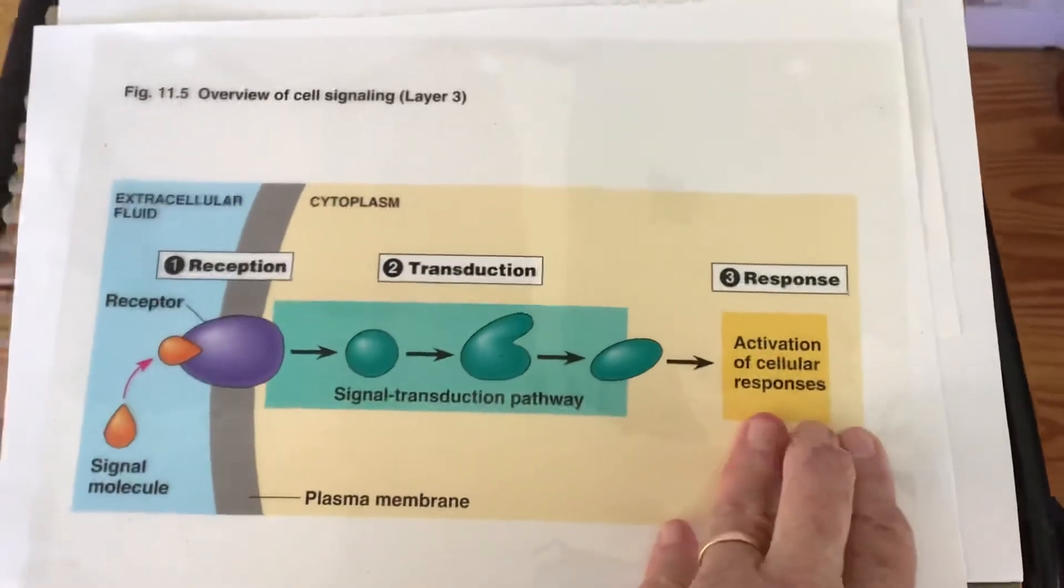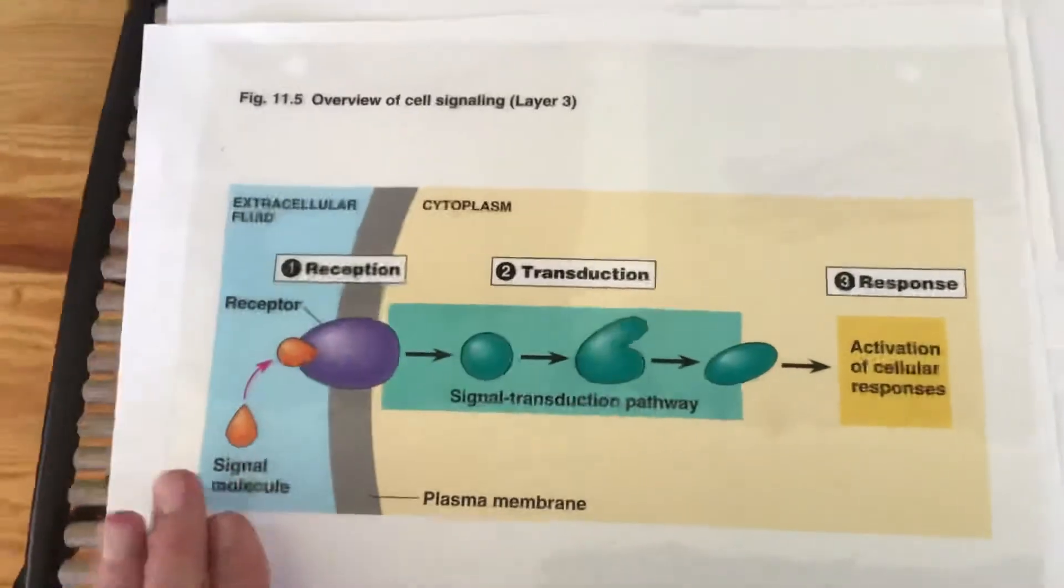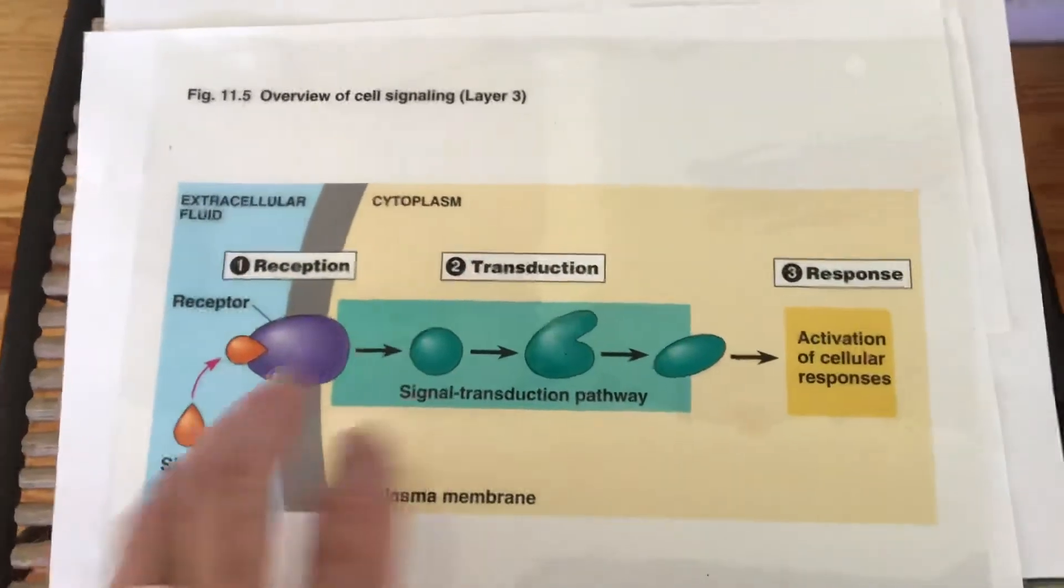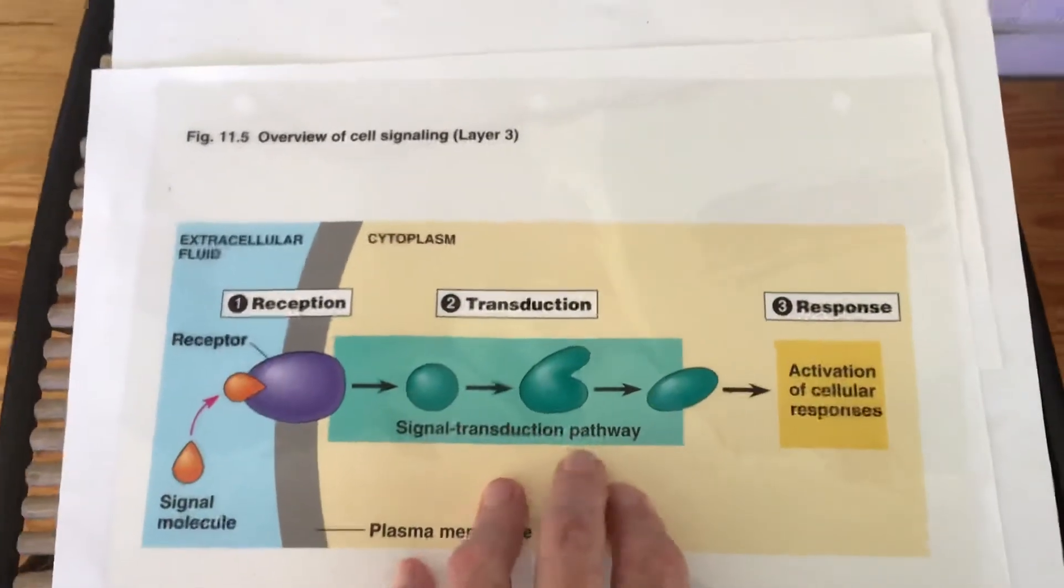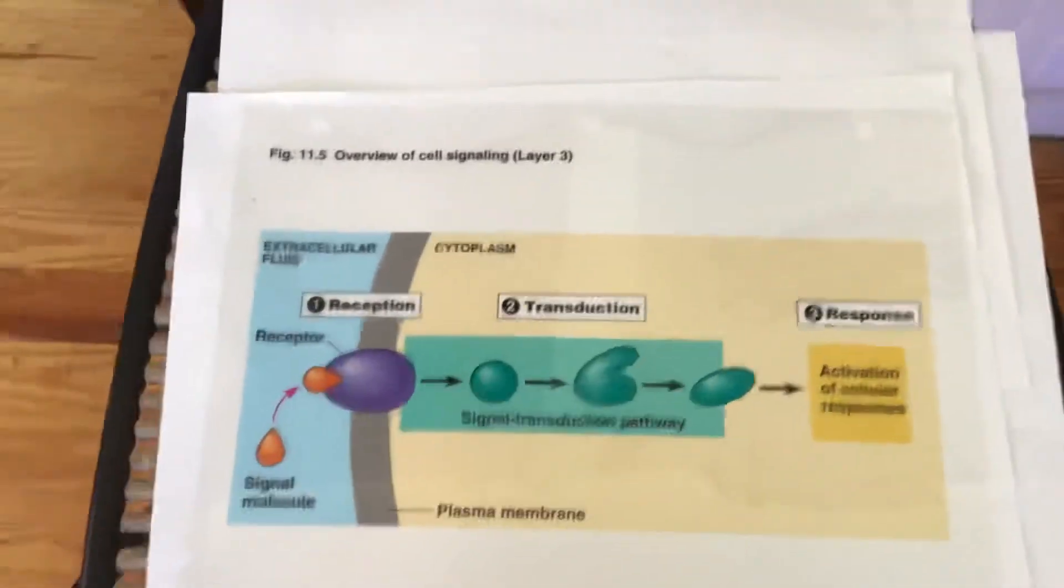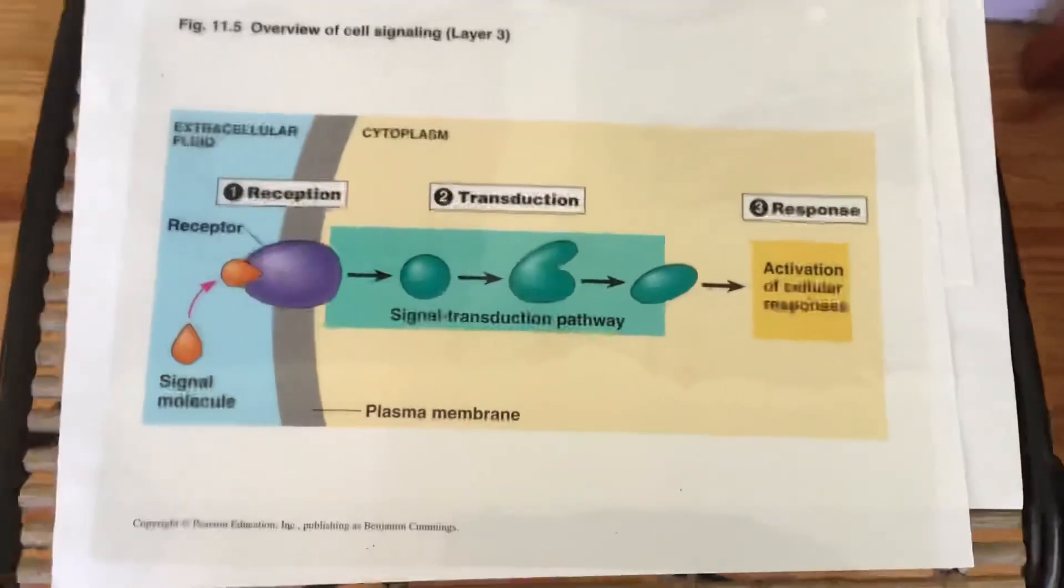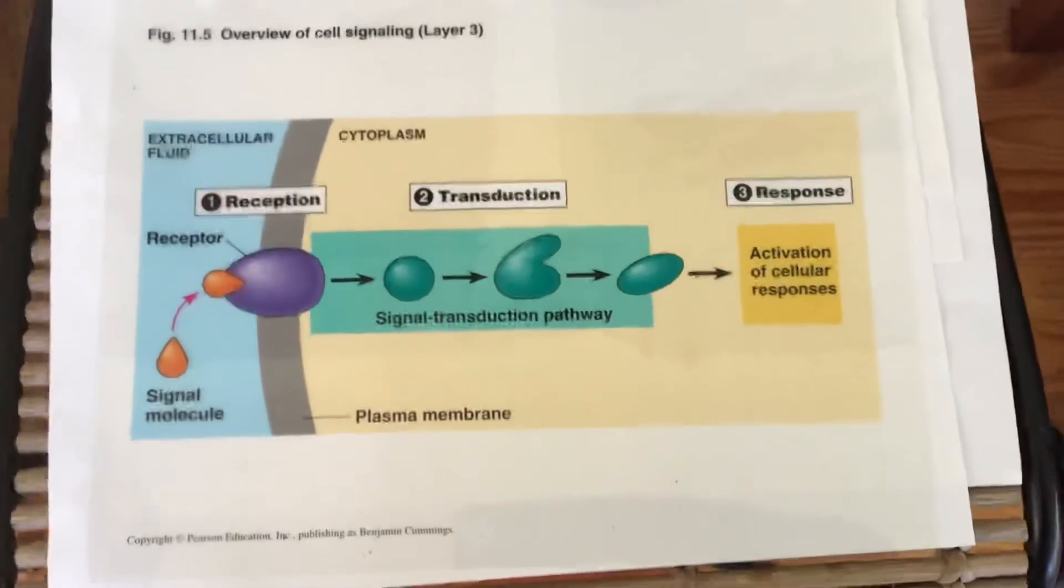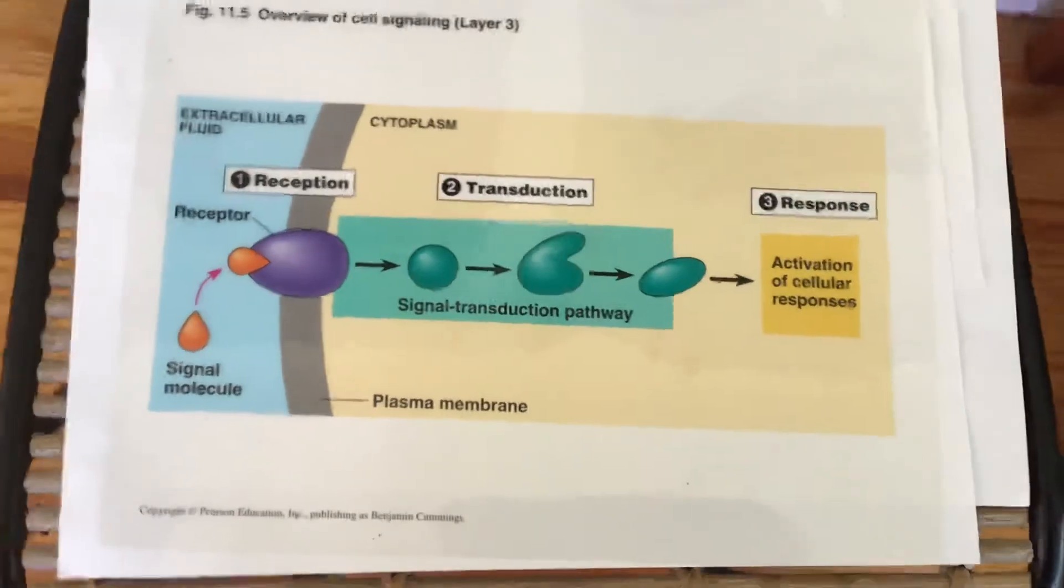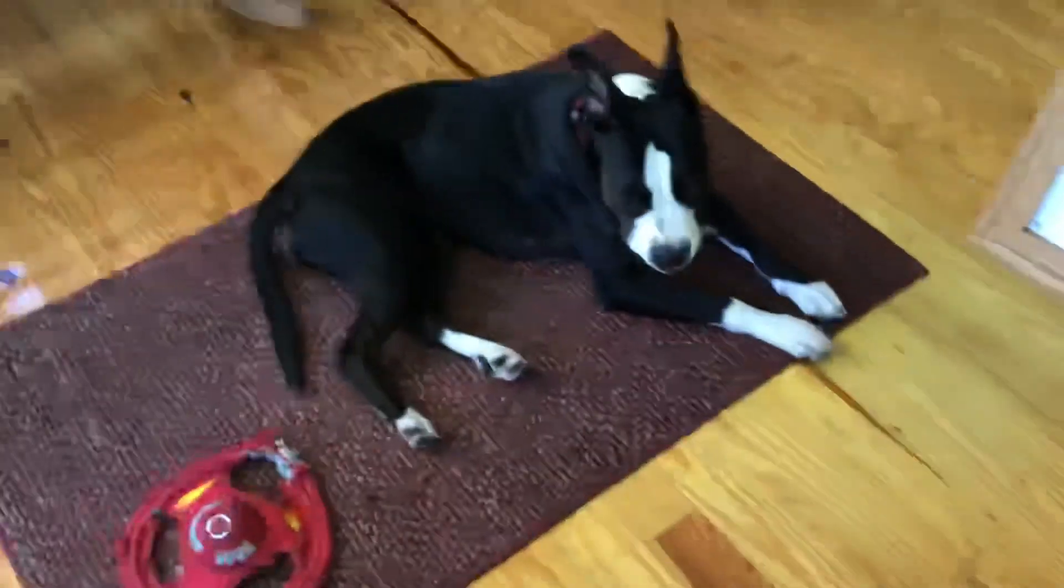So this is called reception, the receiving of the signal, transduction is the signal transduction pathway, and then the response. So when you look over chapter 11 just look for that basic format and you can see there's a whole bunch of different types of those. Here's your co-students their board as well.